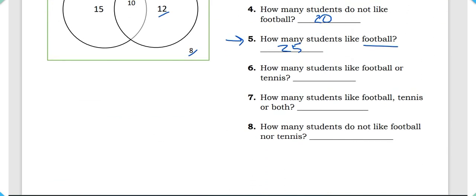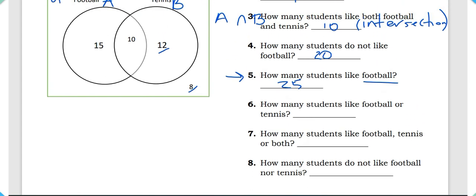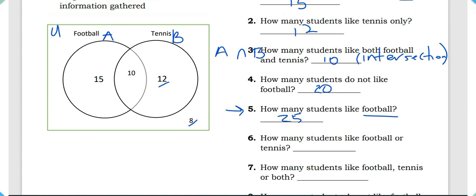Question six: how many students like football or tennis? This question doesn't say 'football and tennis' nor 'both.' It's asking how many students like football, or if they don't like football, they like tennis. So the answer is 15 plus 12, which equals 27 — 27 students either like football or tennis.